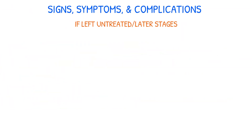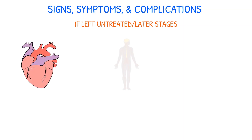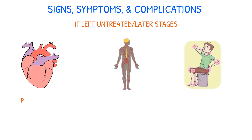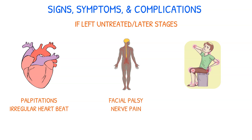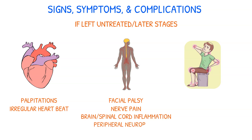If left untreated and in later stages, Lyme disease can cause cardiac, neurological, and joint complications. Cardiac symptoms include palpitations and irregular heartbeat. Neurological complications include facial palsy, nerve pain, brain and spinal cord inflammation, and peripheral neuropathy. Joint pain and swelling as well as arthritis may also manifest.